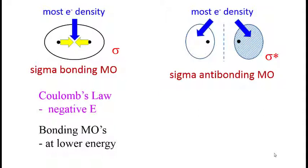Because the electron density is primarily outside the nuclei in the antibonding orbital, and the nuclei are exposed to each other, the nuclei want to repel.